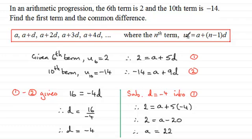You could say that the 15th term u_15 is equal to a, which would be 22, plus 14 times -4. I hope that's given you some idea on how we can go about working out the first term and the common difference when we're given two particular terms in the arithmetic progression.